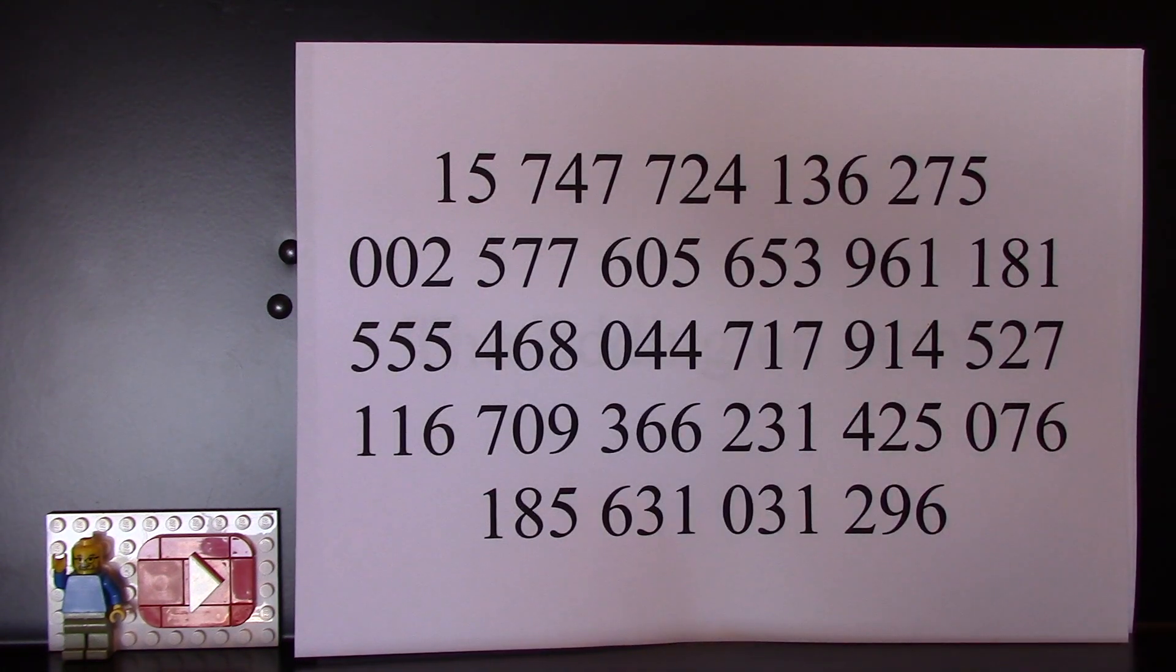And that is 15,747,724,136,275,002,577,605,653,961,181,555,468,044,717,914,527,116,709,366,231,425,076,185,631,031,296. It's slightly smaller, only 10 to the power of 79, but it's now my favorite number because it is a number with an exact value.